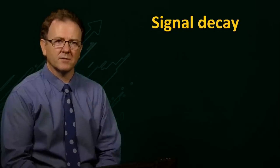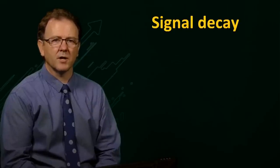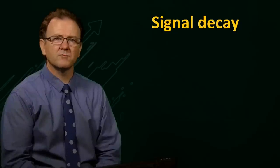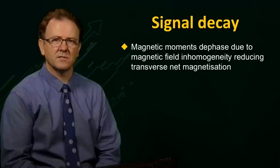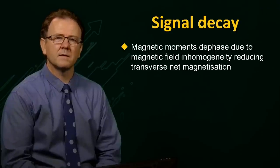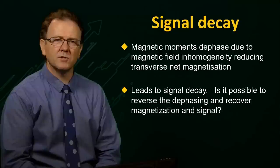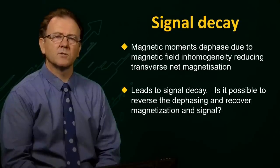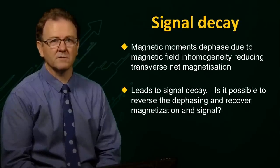We discussed how the dephasing of the magnetization due to B0 field inhomogeneity causes loss of transverse magnetization and signal decay. So, is it possible to reverse this dephasing in some way to recover this lost magnetization and regain the signal?